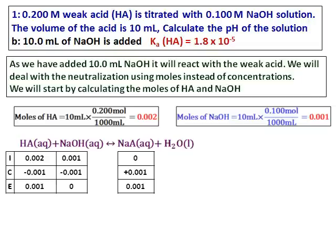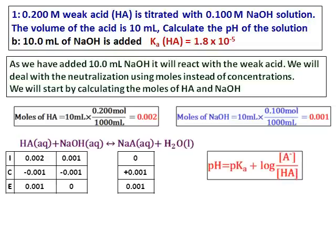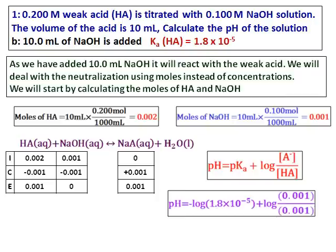So I can use the Henderson-Hasselbalch equation, and I am going to continue with moles only. Because even if I convert to concentration by dividing by volume, that volume will cancel in the ratio in the Henderson-Hasselbalch equation. After substituting all the values, I get the pH.